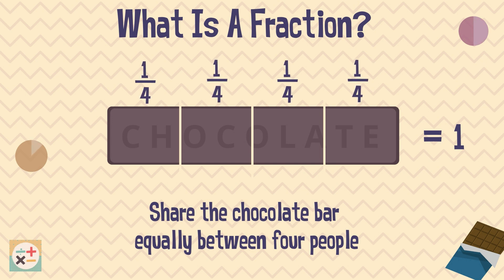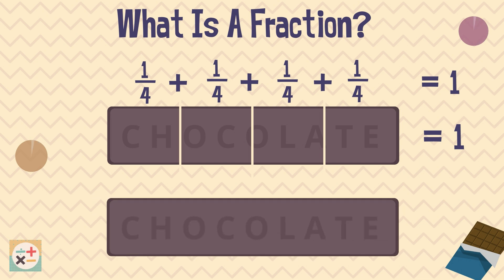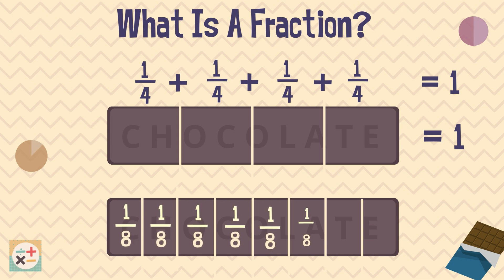Each fraction represents part of the whole bar. If we add all of these fractions up, it will create a whole bar — i.e., one. But what if we want to share a similar bar between eight people? Well, we divide the whole bar into eight equal pieces — in other words, eighths. As you can see, eight lots of eighths will make a whole.